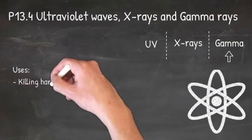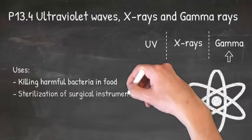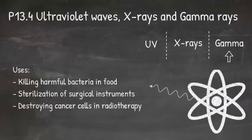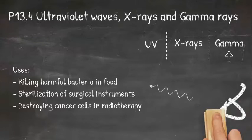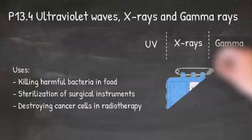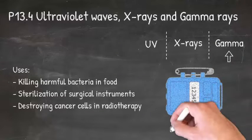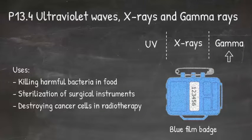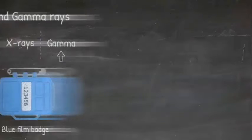Because of this, gamma rays are used for killing harmful bacteria in food, sterilization of surgical instruments and destroying cancer cells in radiotherapy. Anyone who works with ionizing radiation must wear a film badge. This will change color if they are exposed to too much ionizing radiation.